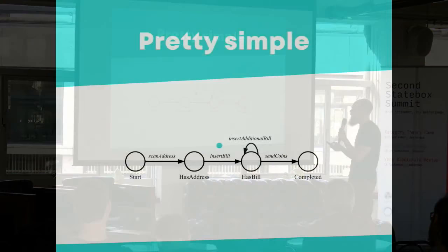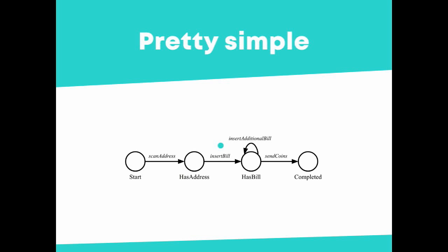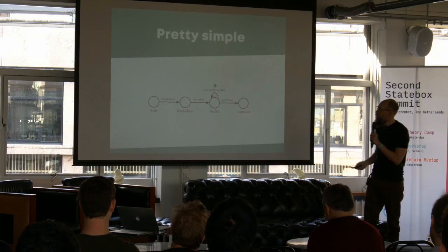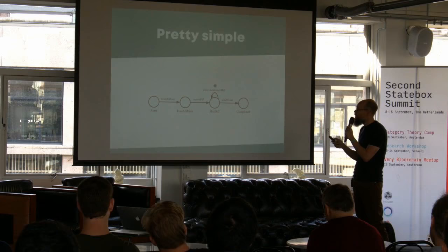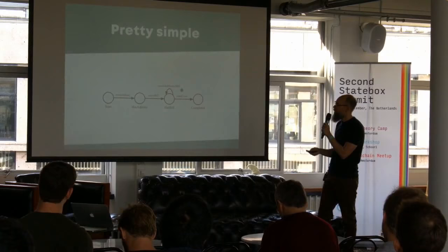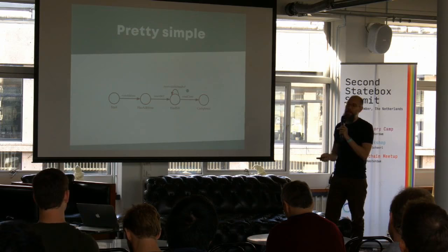Once we've scanned the address, we are now in the 'has address' state. Now we're allowed to insert a single bill — that's the only thing we're allowed to do. Then we have a bill and an address, so there are two things we can do: we can either finish the transaction and send Bitcoins from that one 10 euro bill, or we can keep inserting more bills. The important thing about this diagram is it's already restricting what the computer can do, so we can see clearly the machine isn't going to do bad things it's not supposed to do.